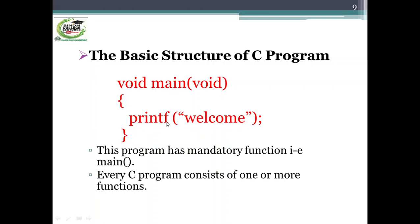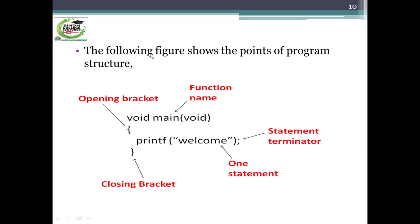The second function is the printf function. The following figure shows the points of the program structure: void main, where main is the name of the function. These are the delimiters — the opening curly bracket and the closing curly bracket. One statement closes the body of the main. The statement ends with a terminator. The semicolon in C language is known as the statement terminator.